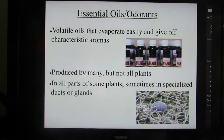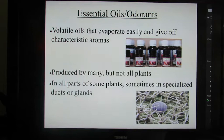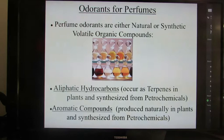Today I'm going to give you a brief overview of the essential oils or odorants. They aren't always all essential oils, but the odorants are usually volatile oils that evaporate easily and give off characteristic aromas. They're produced by many, but not all plants, and they're in all parts of some plants, sometimes in specialized ducts or glands. When you break up a peppermint leaf, you get a stronger aroma because you're breaking up these ducts. Essential oils definition strictly is steam distilled plant material, but we'll be using it in a more general sense as odorants.